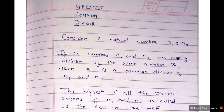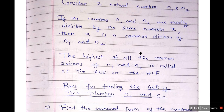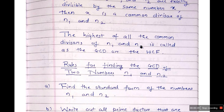Consider two natural numbers N1 and N2. If the numbers N1 and N2 are exactly divisible by the same number X, then X is a common divisor of N1 and N2. The highest of all the common divisors of N1 and N2 is called the GCD or HCF. They are the same terms — GCD means greatest common divisor, HCF means highest common factor. Both are the same thing.